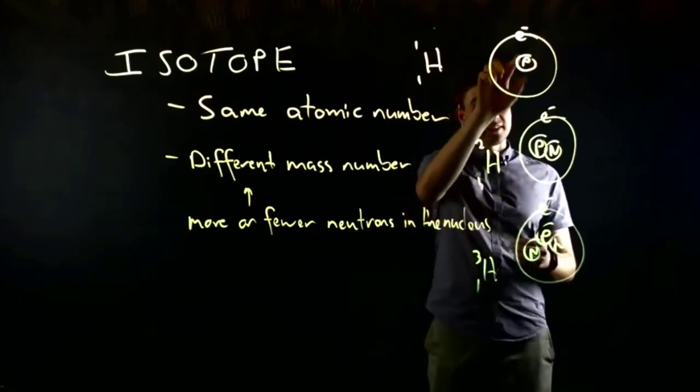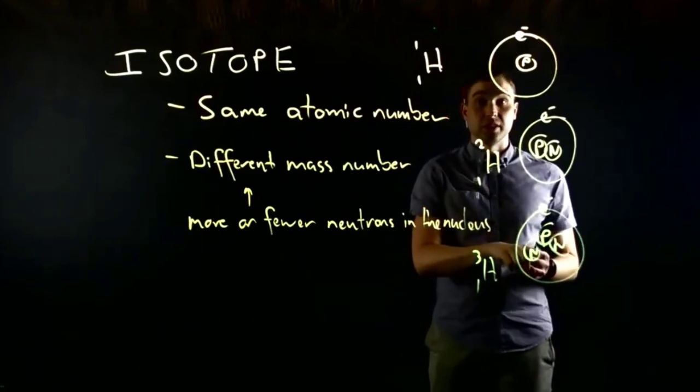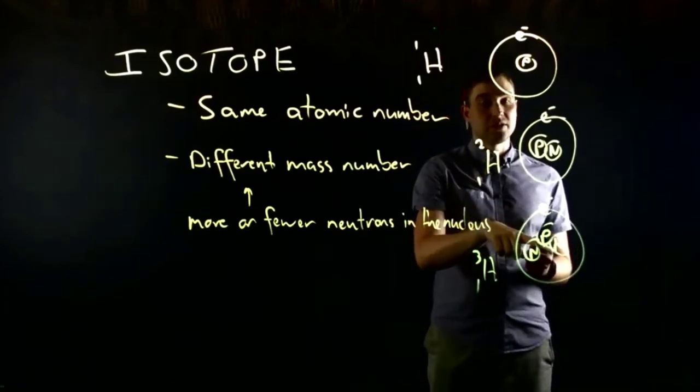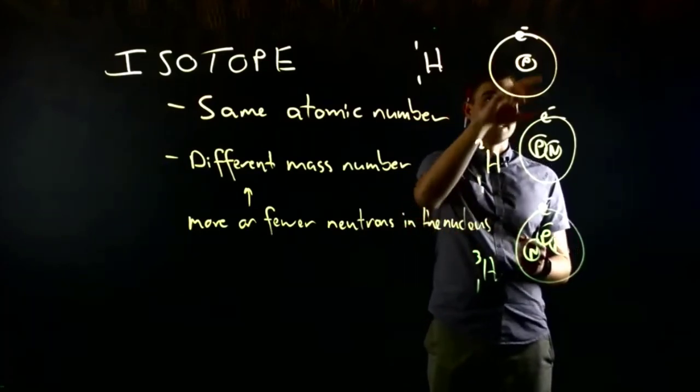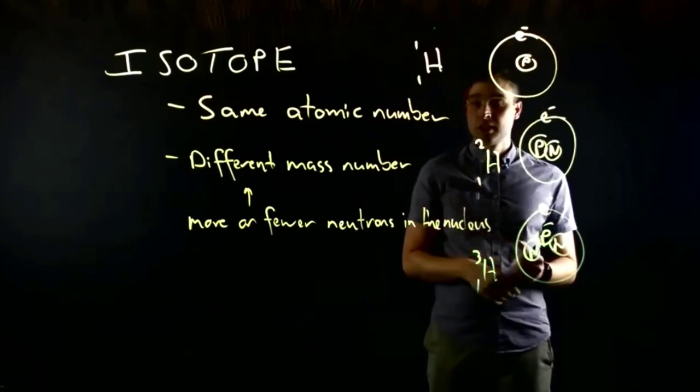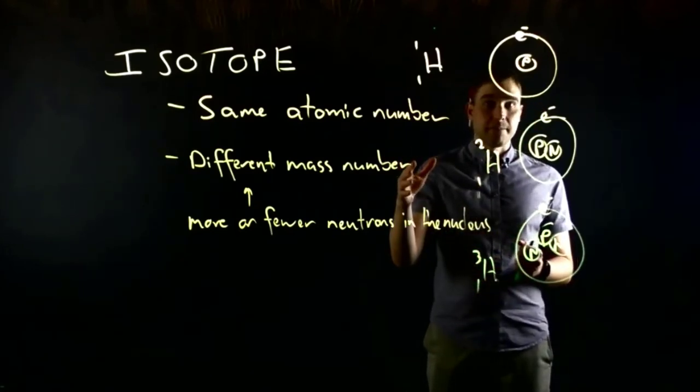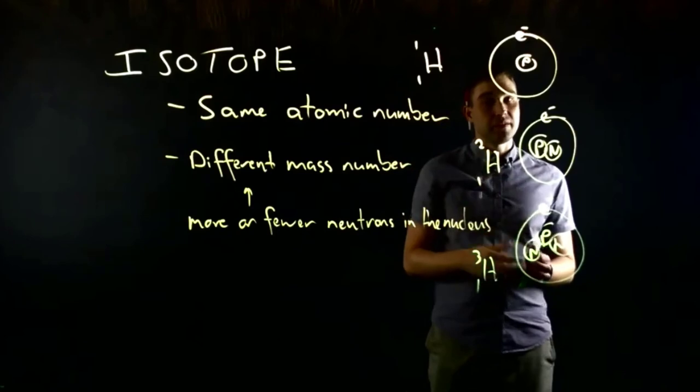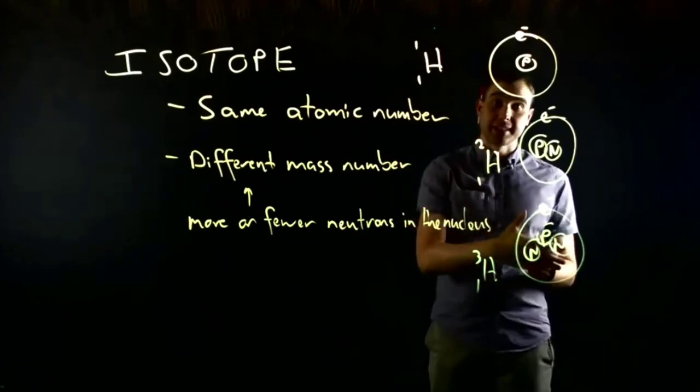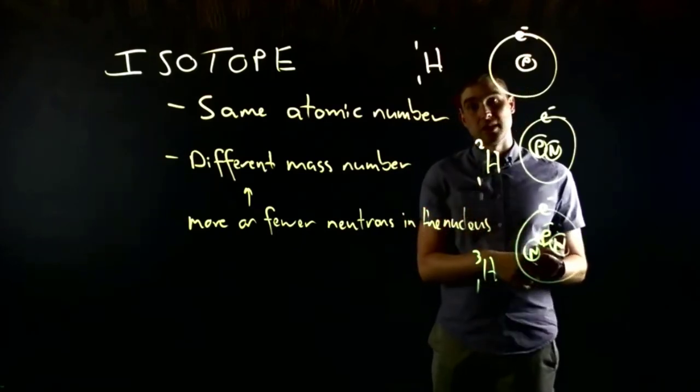So each of these hydrogens has the same number of protons in the nucleus. They all have one proton and because of that they all react the same because they have the same number of electrons. But in terms of their mass, that's different. They have different physical properties—a different mass because of the different number of neutrons present in the nucleus.